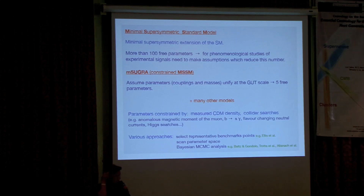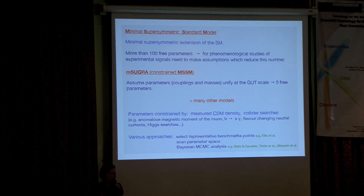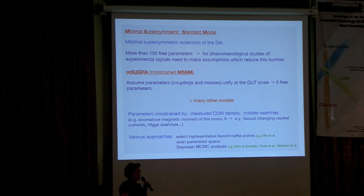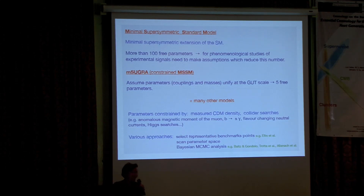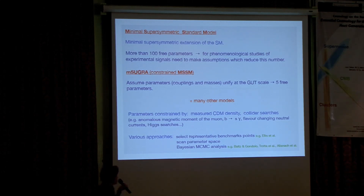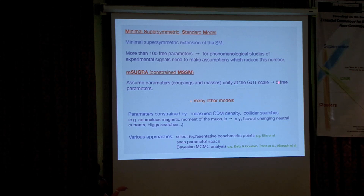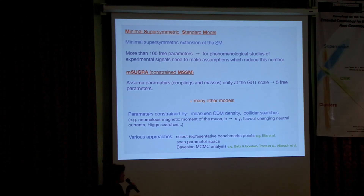I won't go into much detail about supersymmetry models. People usually work in the context of the minimal supersymmetric standard model, basically the minimum extension of the standard model with the minimum number of extra particles — a supersymmetric partner for every standard model particle plus some extra Higgs fields. In the standard model there are already many free parameters measured experimentally, and similarly in supersymmetry we end up with more than 100 free parameters that aren't determined. So what people usually do is work within restricted frameworks, the most popular being MSUGRA or constrained MSSM, which assumes that many parameters — masses and couplings — unify at the GUT scale, reducing the free parameters to only five. This is the simplest framework, and a lot of the things I'll show you later were calculated within it, though there are of course other more general models.